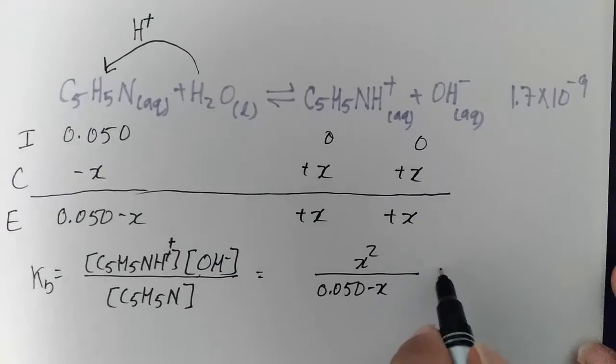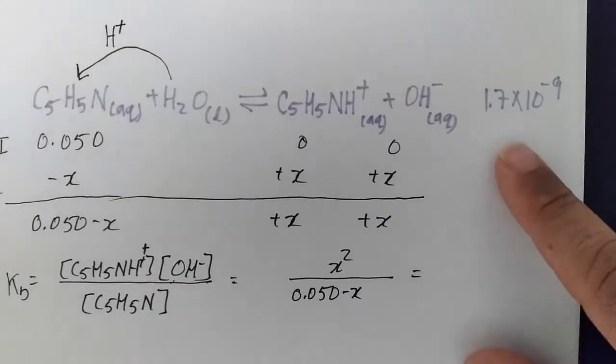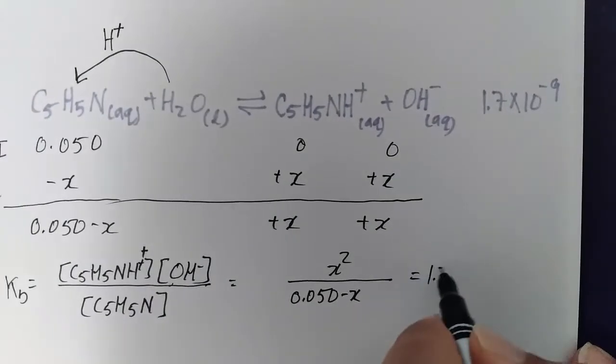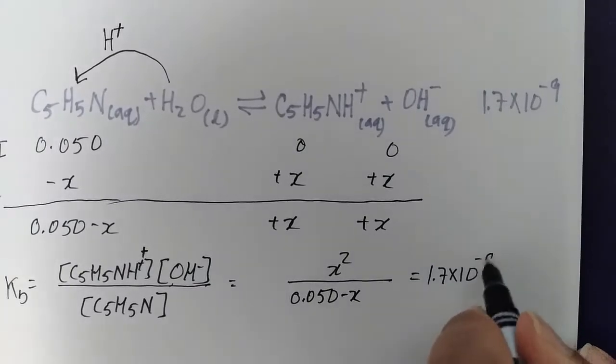And that has to equal the Kb value at the temperature. So remember, these are quoted at a specific temperature. And that's 1.7 times 10 to the minus 9.